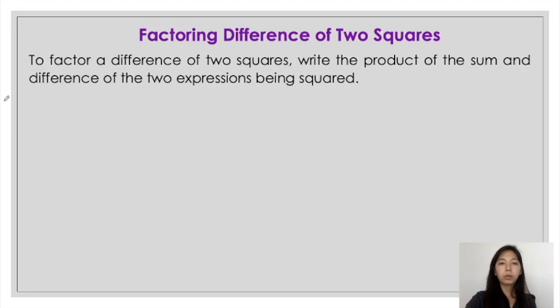Now that you know how to identify if a polynomial is a difference of two squares or not, you are now ready to factor it. To factor them out, you just have to write the product of the sum and difference of the two expressions being squared.